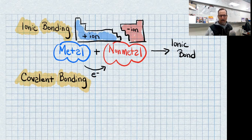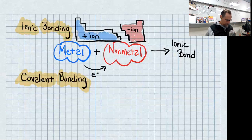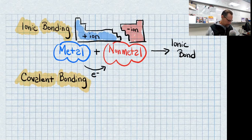We talked about how that metal can have an ionic charge related to the group that it's in. If you need to review that, just review the ionic bonding video, because in this video I want to talk about covalent bonding.